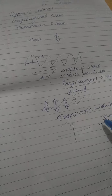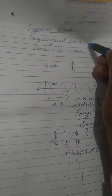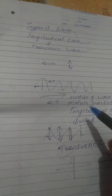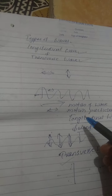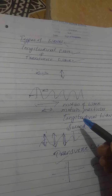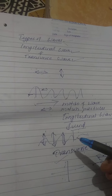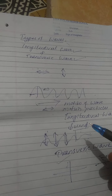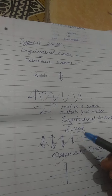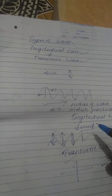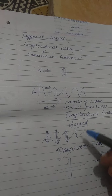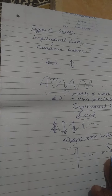Sound waves are termed as longitudinal waves because the vibration of the particle is parallel to the direction of propagation of the wave. But radio waves and light waves are classified as transverse waves because the particles vibrate perpendicular to the direction in which the wave is moving. If they are parallel, it is longitudinal; if they are perpendicular to one another, it is called a transverse wave.